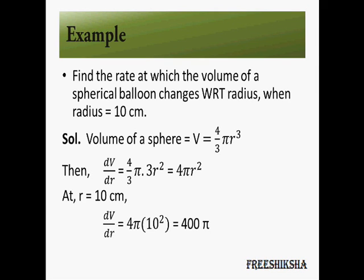Consider a spherical balloon with radius 10 centimeters, and we wish to calculate how its volume is changing at that point. The volume of a sphere is 4/3 pi r cubed. Differentiating with respect to r gives 4 pi r squared, which is the formula for the rate of change of volume with respect to radius. Substituting r = 10, we get dV/dr = 400 pi.